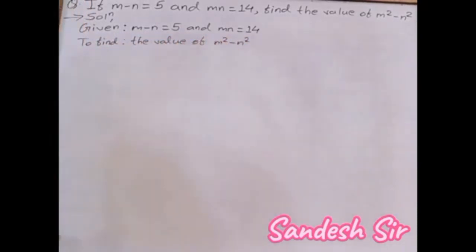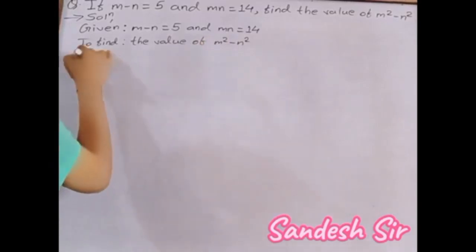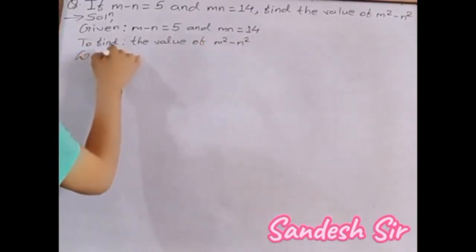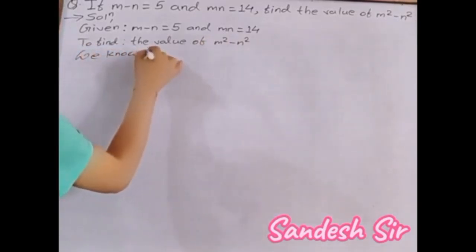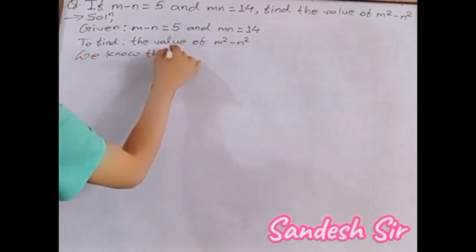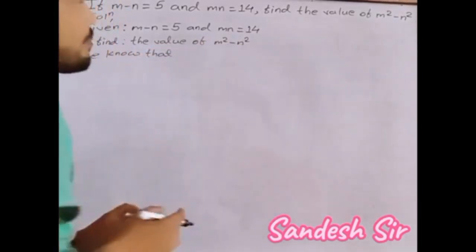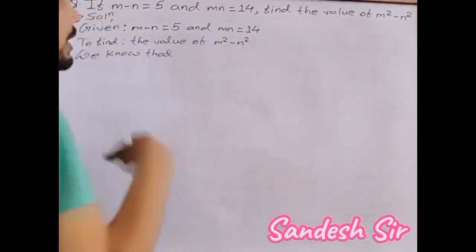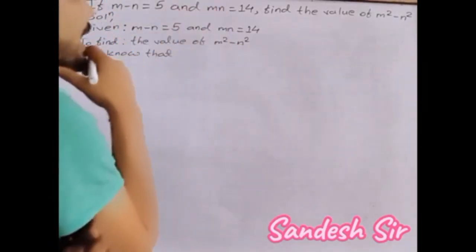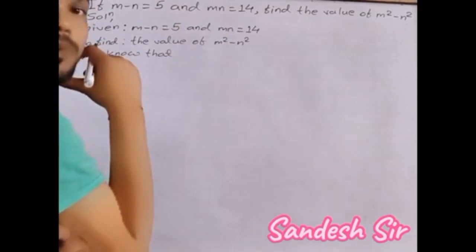We know that m squared minus n squared equals the formula m plus n multiplied with m minus n.